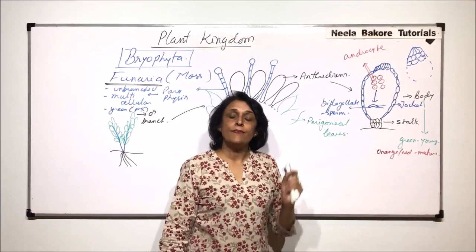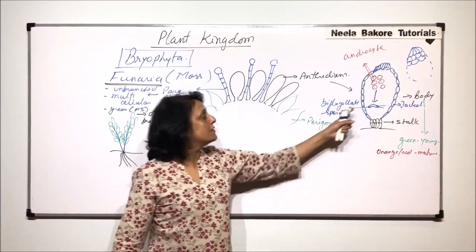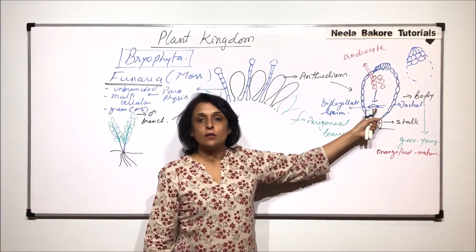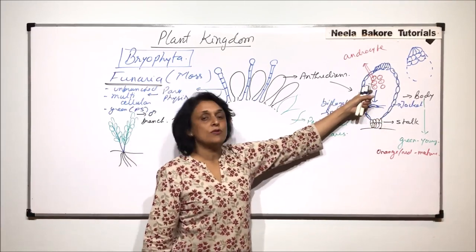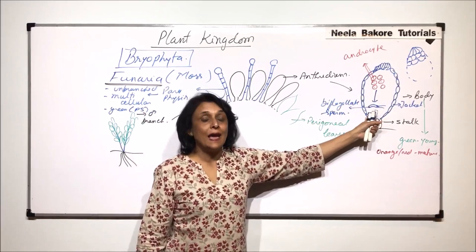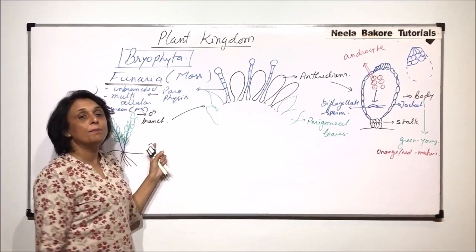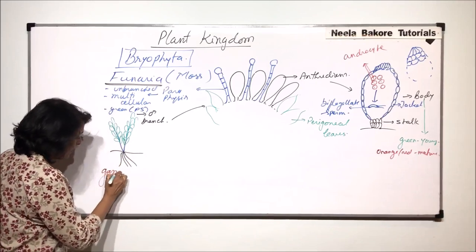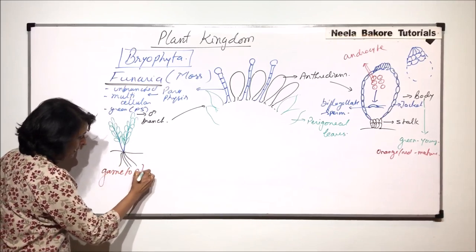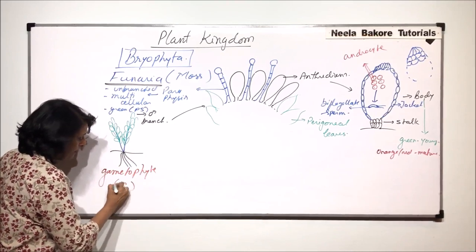The number of male gametes or sperm would be same as the number of androcytes. Normally, we say that cells which give rise to gametes undergo meiosis to form haploid gametes. But here, these androcytes are also haploid. That means the complete gametophyte is a haploid plant. All the cells are haploid, even the androcytes are haploid.